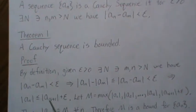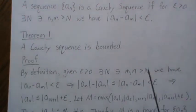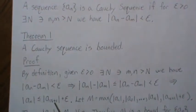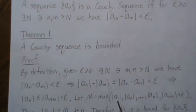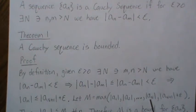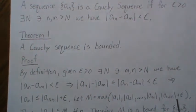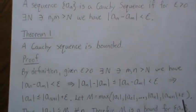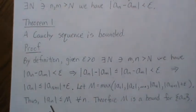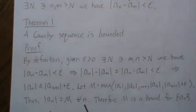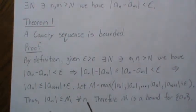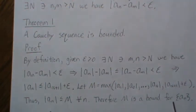Now, notice that, so this is true for all n greater than capital N. So if we let M be the maximum of the absolute value of A_1 all the way to absolute value of A_N, and then add in this last term here, that means that the absolute value of A_n is less than or equal to M, and this is for all n, every one of them. So therefore, M is a bound for the sequence A_n, and we're done.